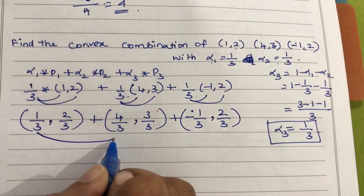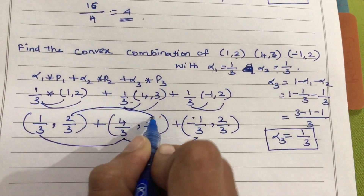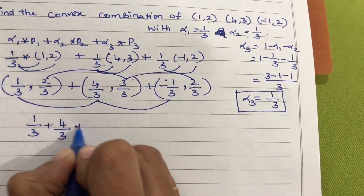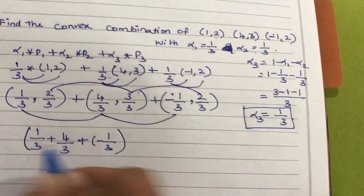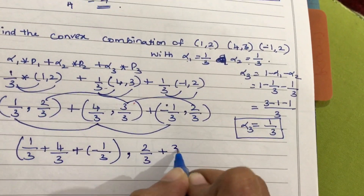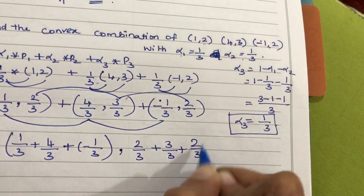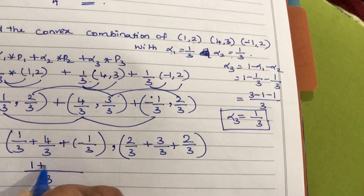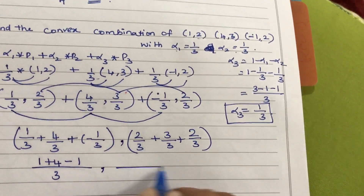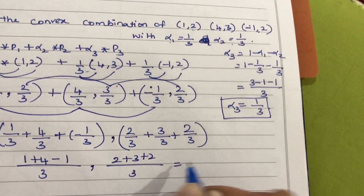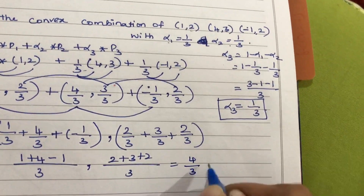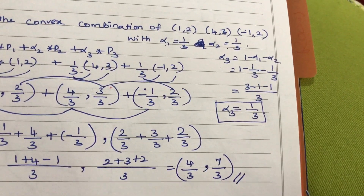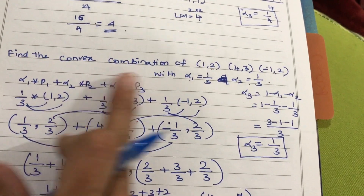Now combine all the x-coordinates and all the y-coordinates. For x: 1/3 plus 4/3 plus (-1/3), with 3 as common, gives (1 + 4 - 1)/3 = 4/3. For y: 2/3 plus 3/3 plus 2/3 = (2 + 3 + 2)/3 = 7/3. So the final answer for the convex combination of 3 points is (4/3, 7/3).